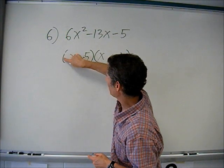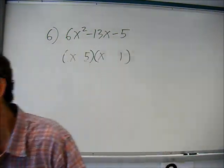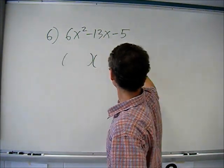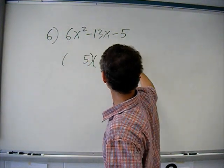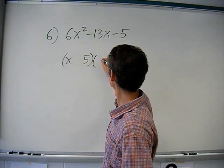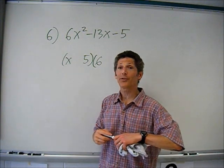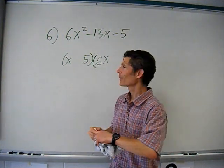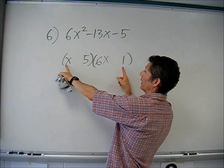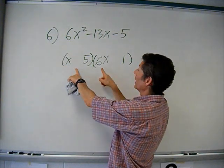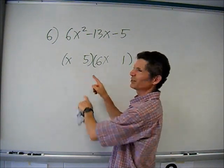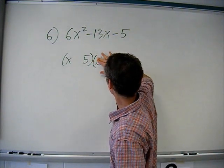That doesn't work, so I'll try swapping — put 1x and 6x in the other positions, keeping the five and one where they were. Let me check: the outers give 1x times 6 which is 6x, but the inners give 30x — no way to get 13 from here. So 6 and 1 are out. We're faced with a 2 and a 3.